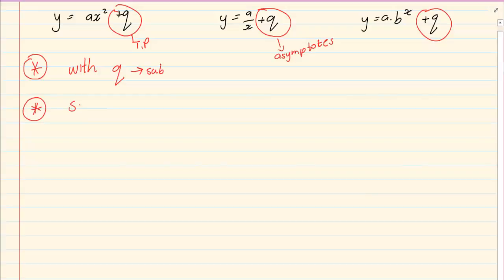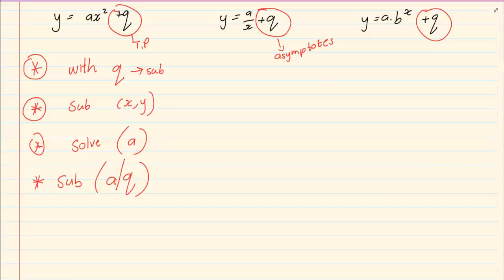After we substitute q, we're going to substitute any random point, and our aim is to solve for a. Once you solve for a, you simply substitute and you got your equation. What are we going to substitute? We only substitute a and q. Now let's take the following example.